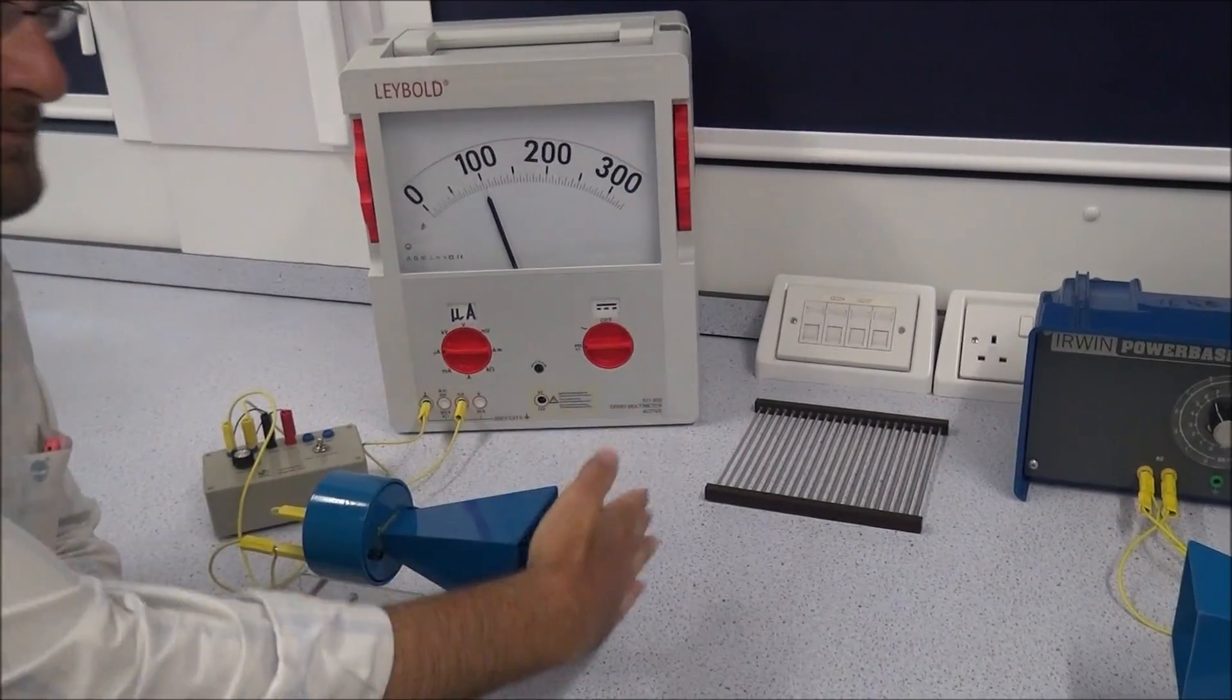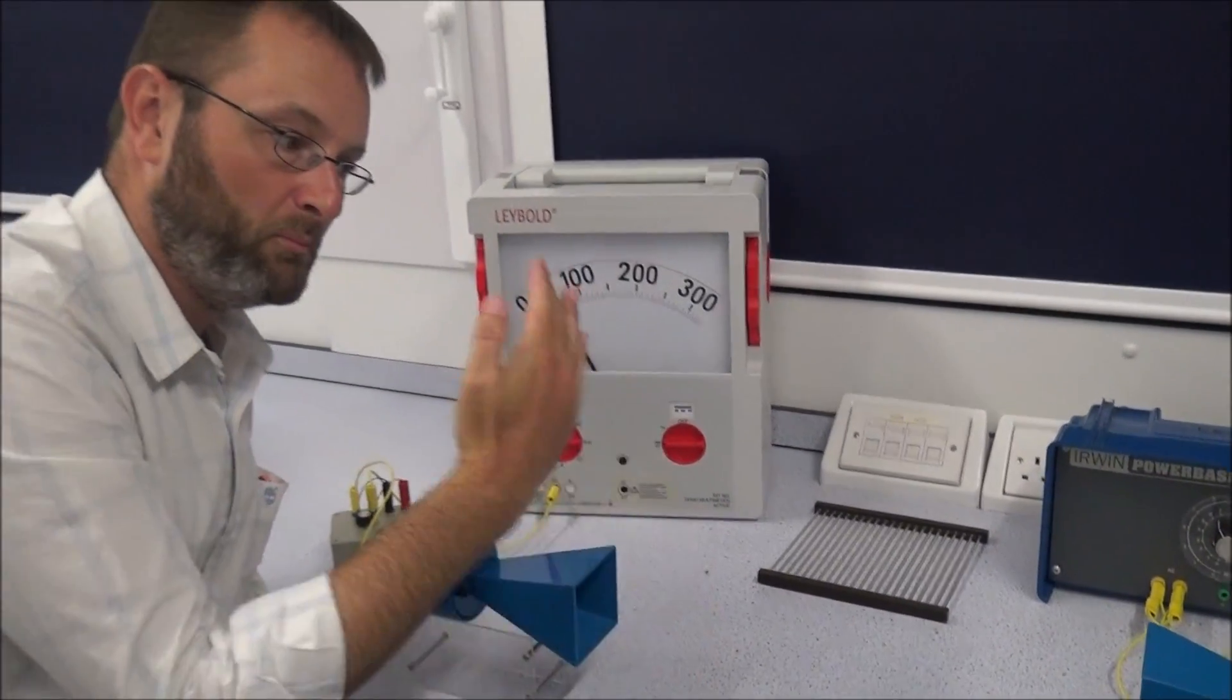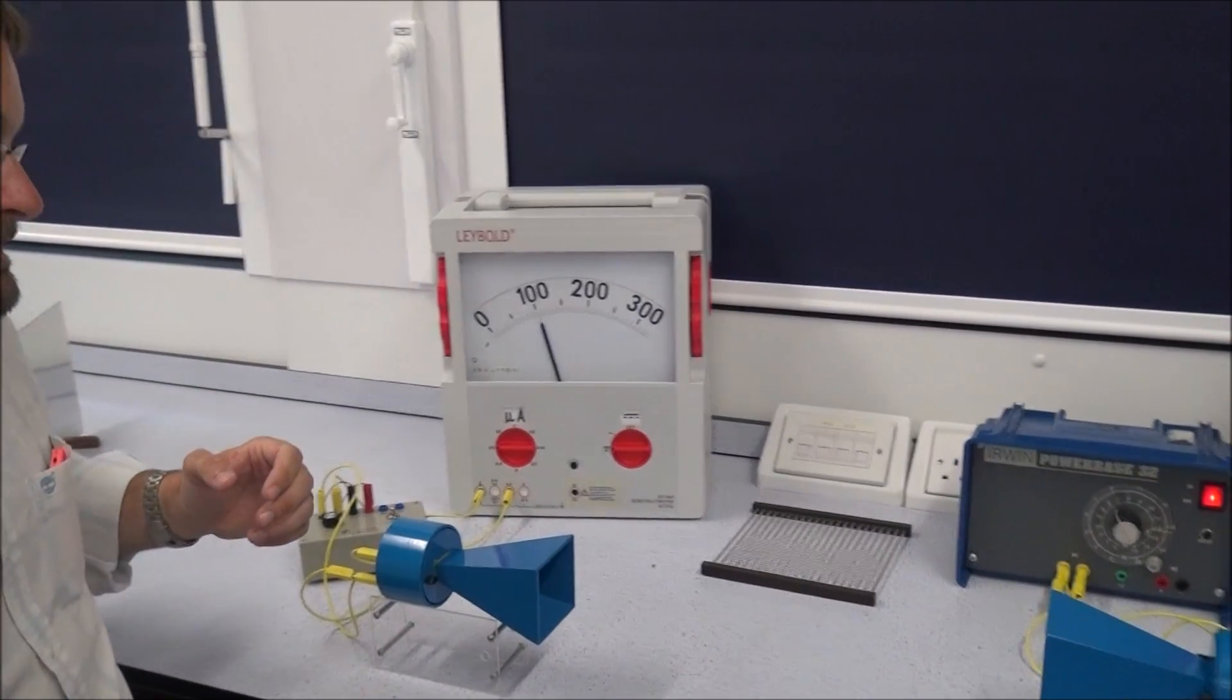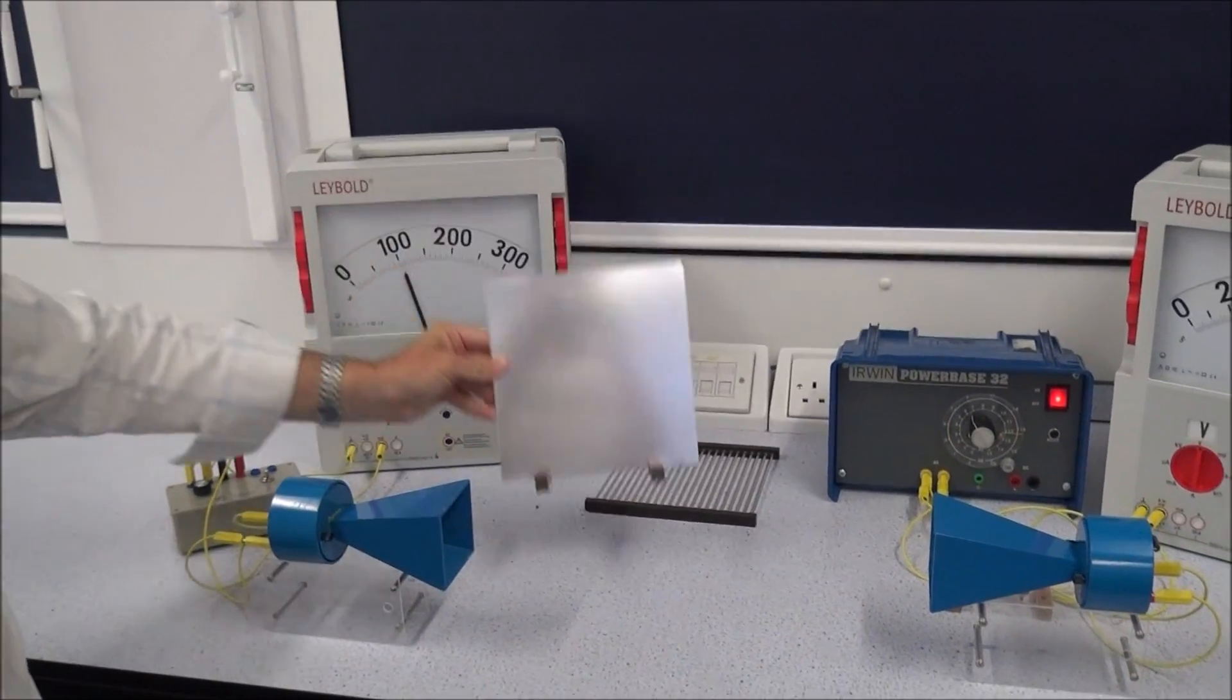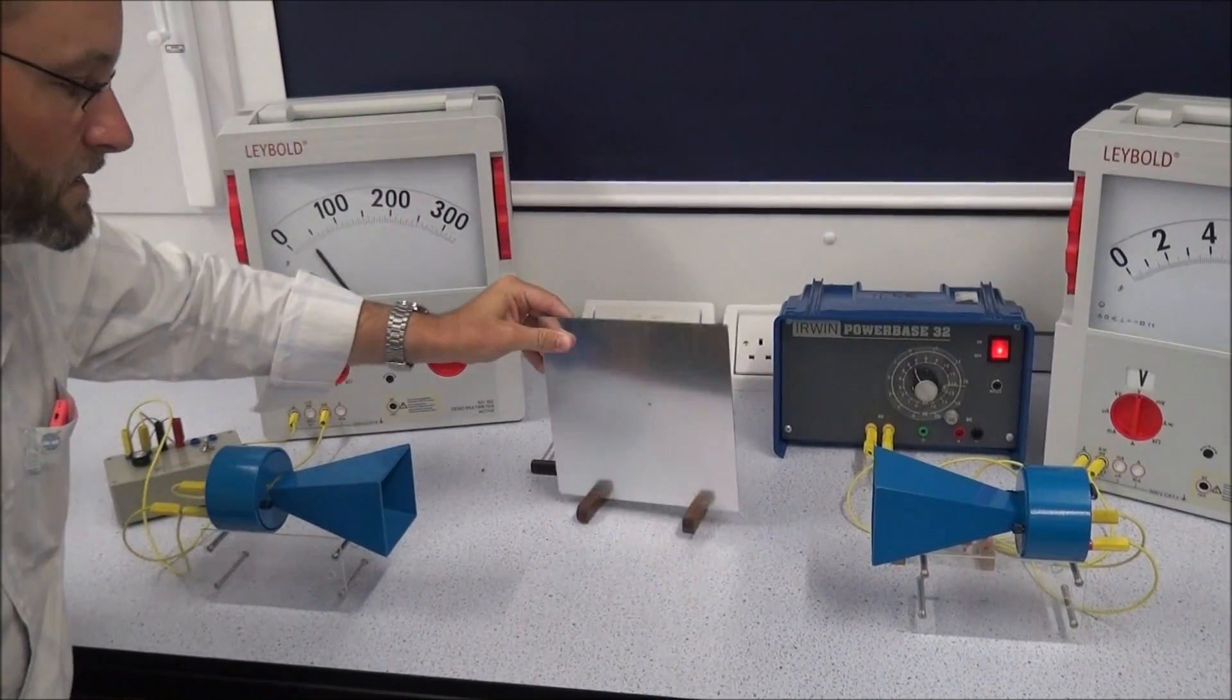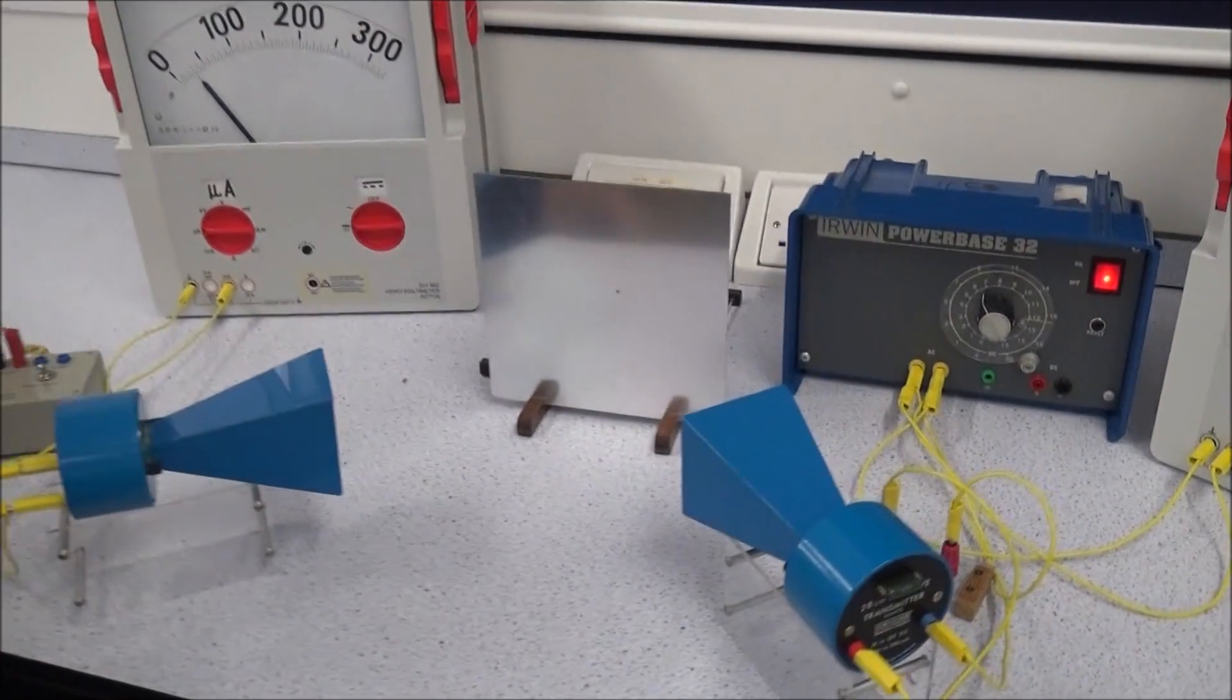Just very simply, I can stick my hand in the way and you can see that it definitely is blocking off something. You can do all sorts of things with it. There were sometimes supplied with bits of aluminum sheet that can stand up so you can demonstrate very simple reflection, for example.